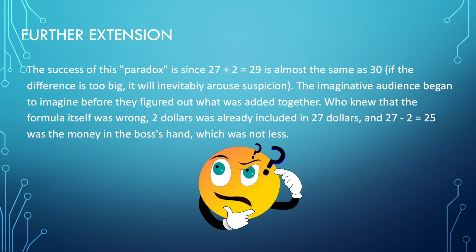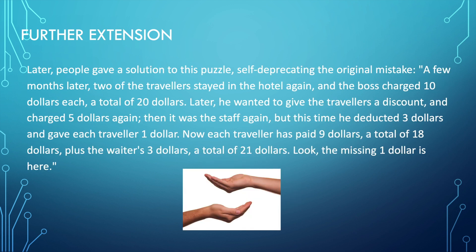The success of this paradox is that $27 plus $2 equals $29, which is almost the same as $30. If the difference is too big, it will inevitably arouse suspicions. The imaginative audience began to imagine before they figured out what was added together. Who knew that the formula itself was wrong? $2 was already included in the $27, and $27 minus $2 equals $25 — that's the money in the boss's hand, which was not less.